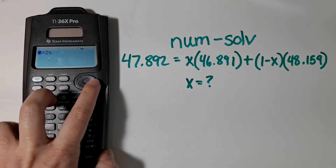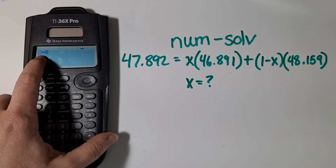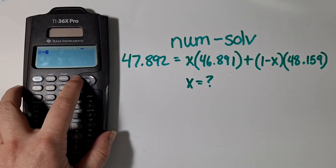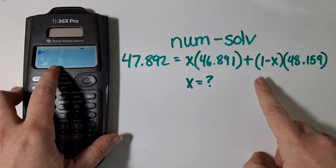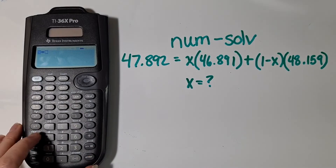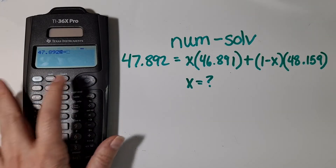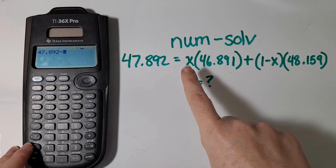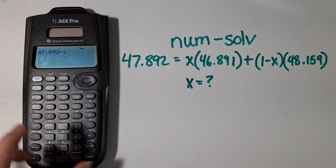I've previously used this so I can clear it out. But if you've never used this before, you'll see two squares with an equal sign in between them — that's where you type out the formula as it appears on your paper. So I can type in 47.892, then scroll over to the other side of the equal sign. And to get my x, I'm going to hit my x, y, z button once.